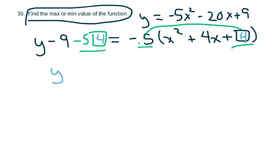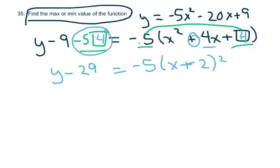So on this side, you're going to get y minus 29, because this equals 20, equals negative 5 times x, take your plus and half of 4 is 2 squared. Alright. So basically the vertex is negative 2 comma 29. And if you want, you can go ahead and move this over. It's negative, so it's going to be positive here.